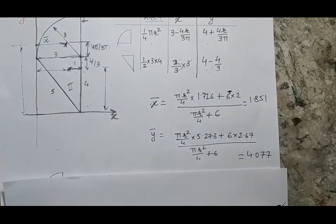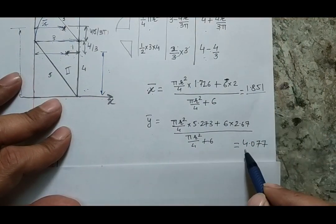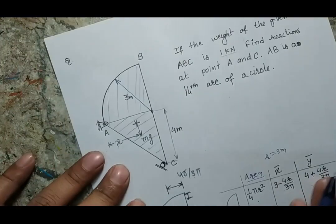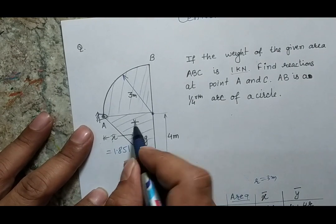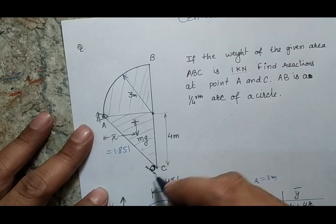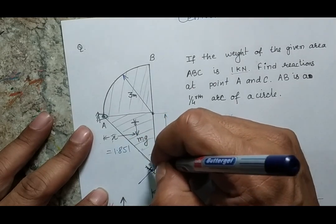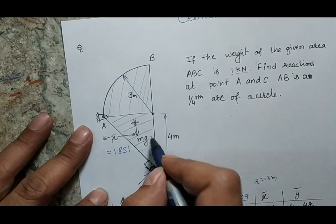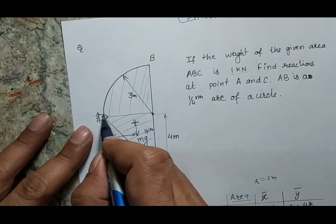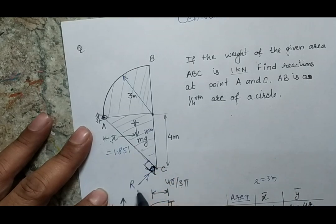When I put all the values into the formula, I get x_bar = 1.851 and y_bar = 4.077. Now, knowing x_bar = 1.851, and since point C is a roller joint, the reaction RC will be perpendicular to that surface — so the reaction direction is at 90 degrees. Taking the moment at point A: mg × x_bar is balanced by RC × 5 meters.